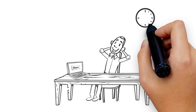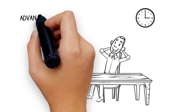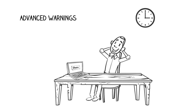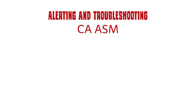In much the same way, when a problem strikes your website in the early morning hours, CA App Synthetic Monitor gives your team the advance warnings to save the end user experience before the problem is realized and reported by the customer. Today you'll learn the alerting and troubleshooting capabilities of CAASM that make you aware of problems before they impact the customer experience.